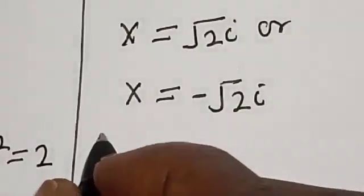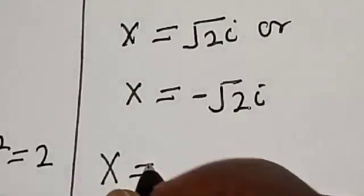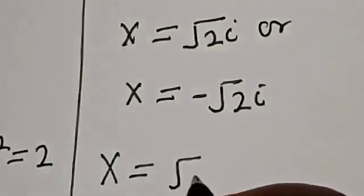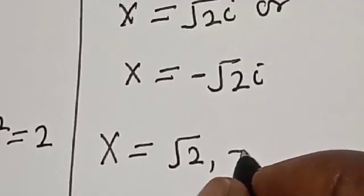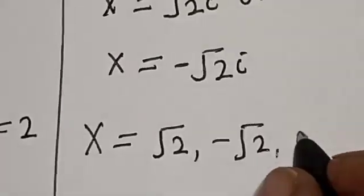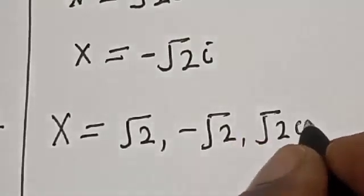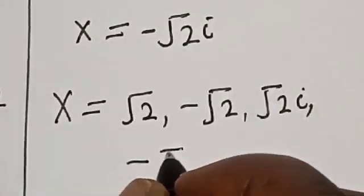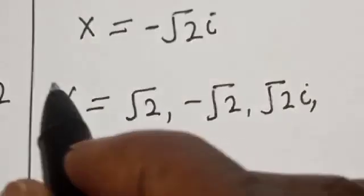Our final answers are: x is equal to root 2, negative root 2, root 2i, and negative root 2i. That is the value of x.